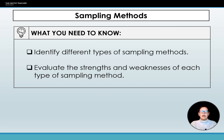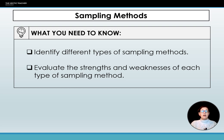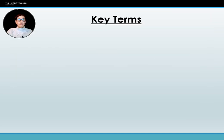In this lecture we're going to be looking at sampling methods. Sampling methods or sampling frames are the ways in which a researcher will determine how they are going to pick or select the people that are going to be part of their study. Before we go into the actual sampling frames we need to be aware of some key terminology.